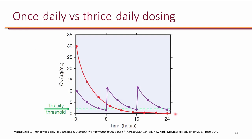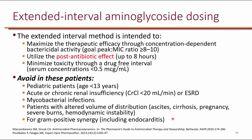With once-daily high-dose extended interval dosing, a very high dose gives a very large peak (ensuring efficacy), and because it is dosed only once daily, there are 24 hours for levels to drop below the toxic range. The post-antibiotic effect means it is acceptable to wait until the next day. This approach both increases efficacy due to the higher achievable peak and reduces toxicity compared to traditional multiple-daily dosing.